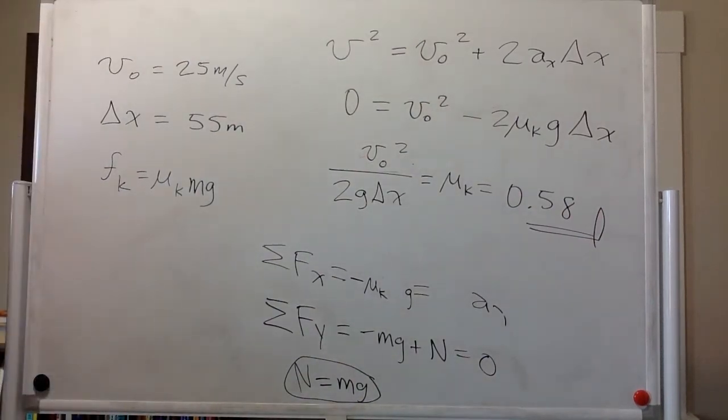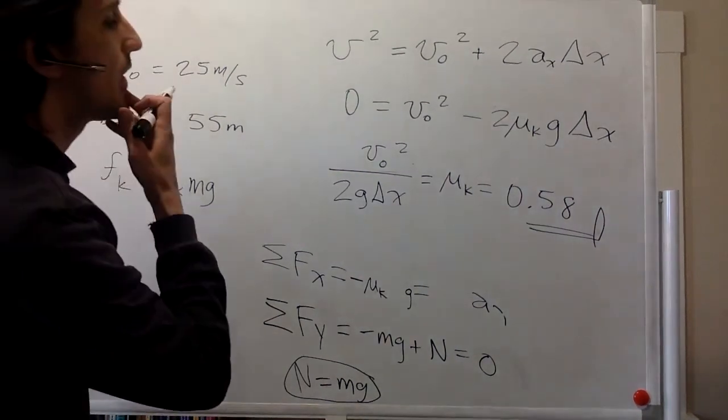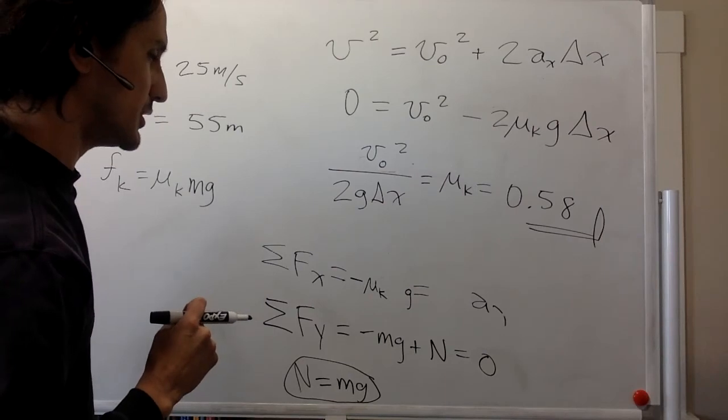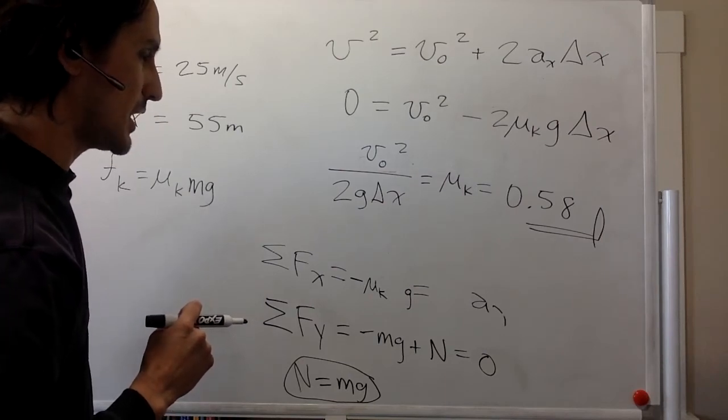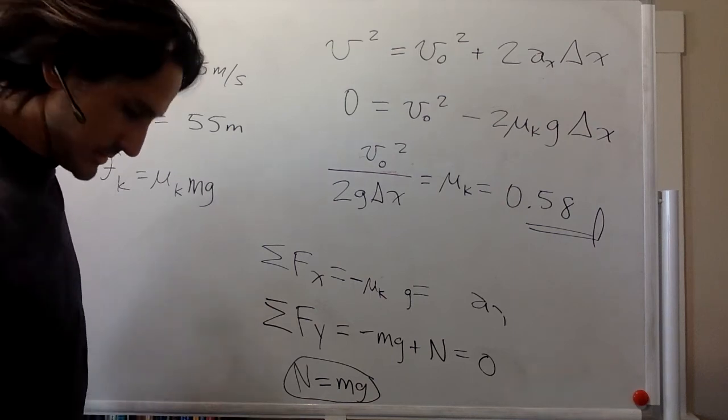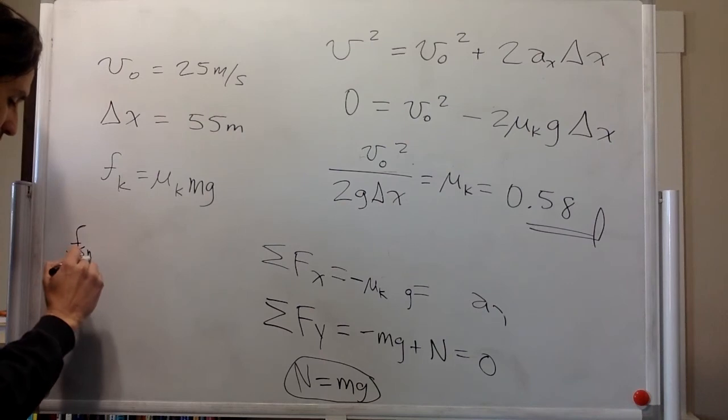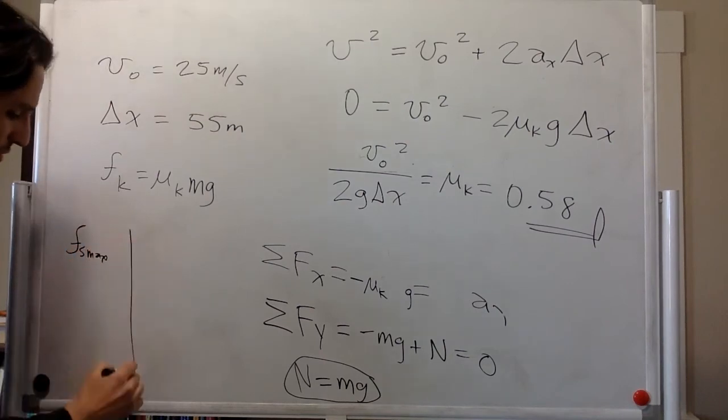For the second part, it's asking you, assuming that the truck stops, can you stop without the valuables sliding and being damaged, if the coefficient of static friction between the truck and the valuables is 0.6? And so the answer to that is going to be yes, because you have your fs max, which is going to be 0.6.